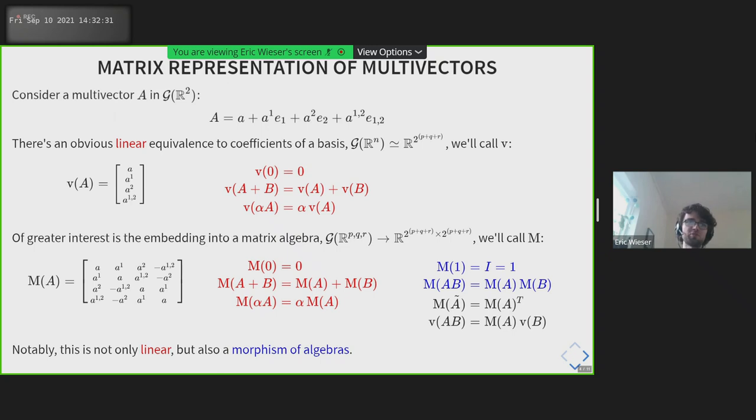The fact that this is a morphism of algebras is very useful, because it means if you have any multivector expression consisting only of addition and multiplication, or scaling, or reversion, then you can convert the whole expression into matrices, and it will mean exactly the same thing.